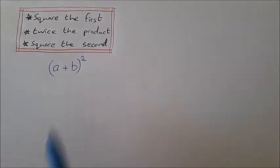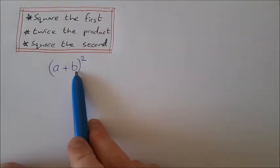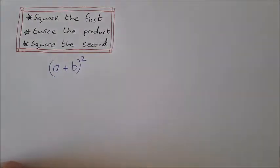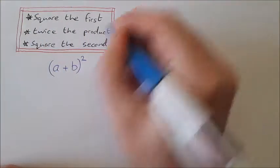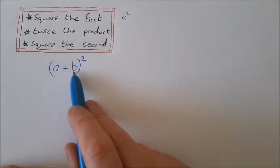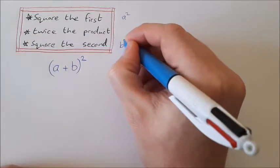So what does that mean? Well, this is the first number, this is the second number. If we square the first, a² is just a². Square the second, b², b².